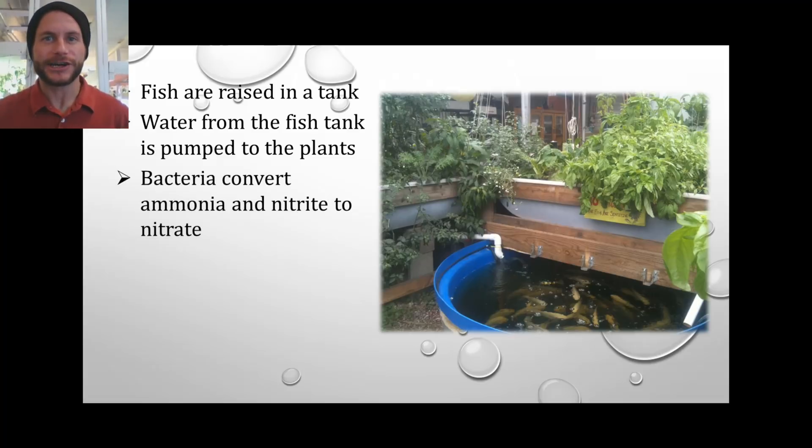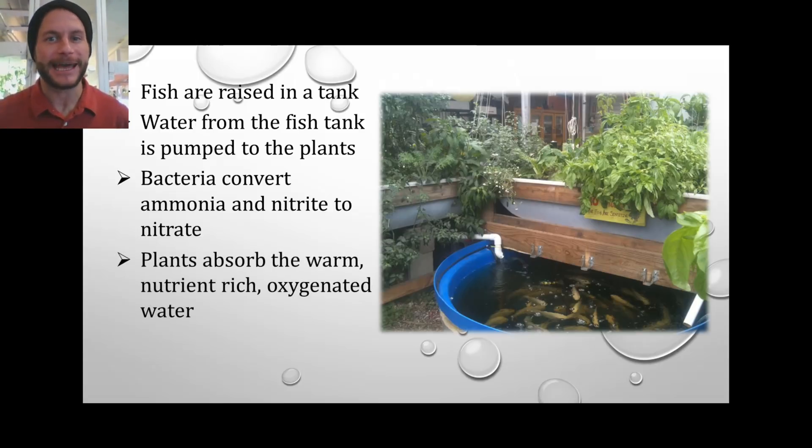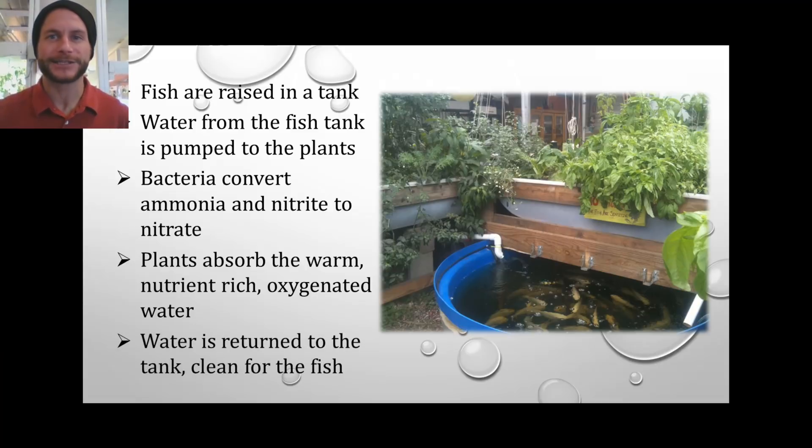The naturally occurring bacteria that we talked about in the last module convert that fish waste into nitrite and then nitrate, which is a usable plant nutrient. The plants are able to take that out of the water and they return clean water back to the fish area.